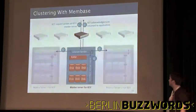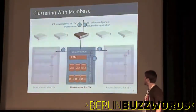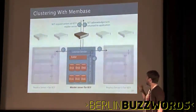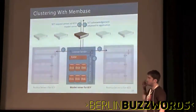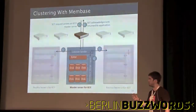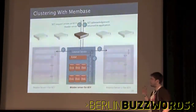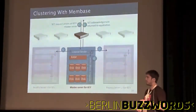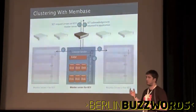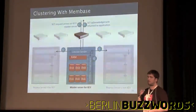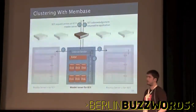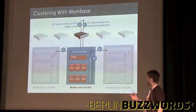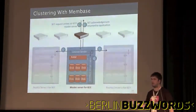Everything that gets written to Membase goes straight into RAM. Asynchronously — there is a sync command, but generally asynchronously — stuff gets persisted to disk after it's served from RAM. The RAM is where you want to keep your entire working copy of data. It keeps an LRU cache. When it starts filling up, items will get ejected to disk. And if you need to read an item from disk, it'll just get kept in RAM for the time being until it eventually gets ejected.